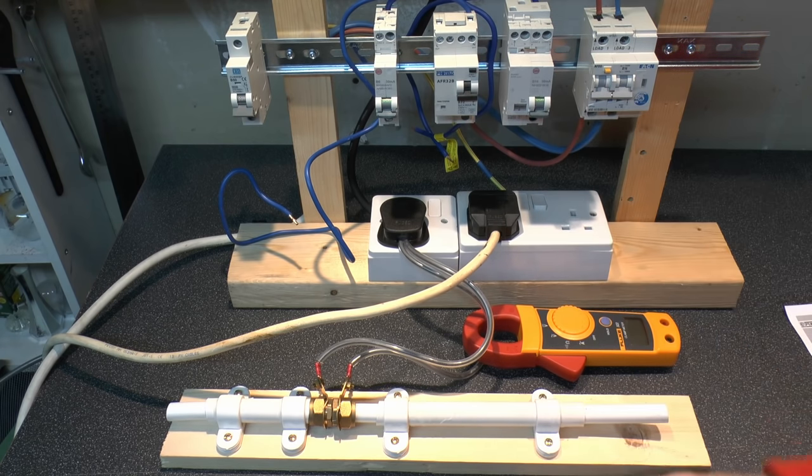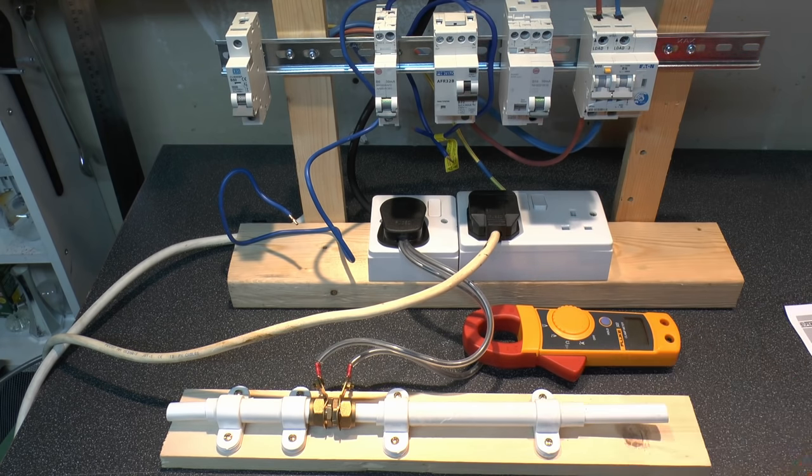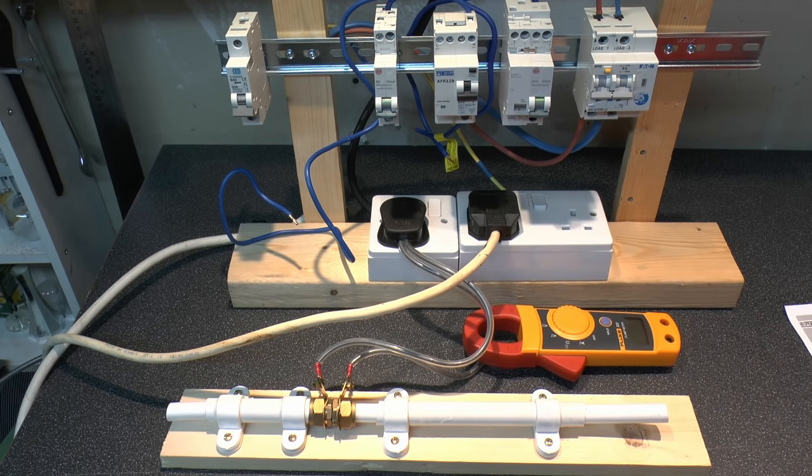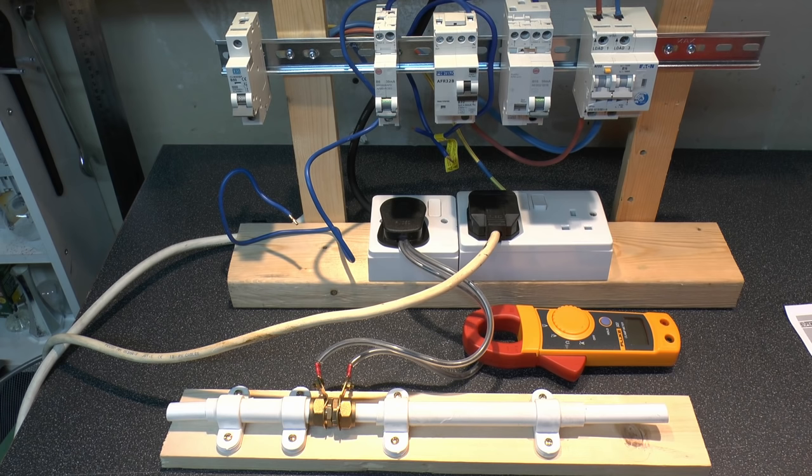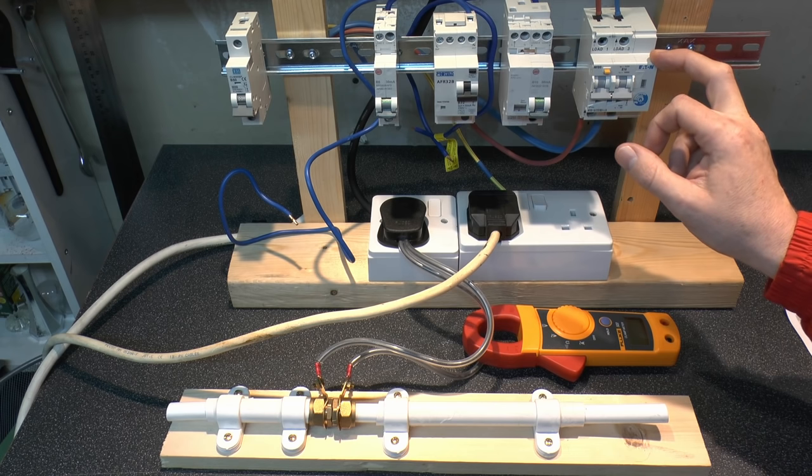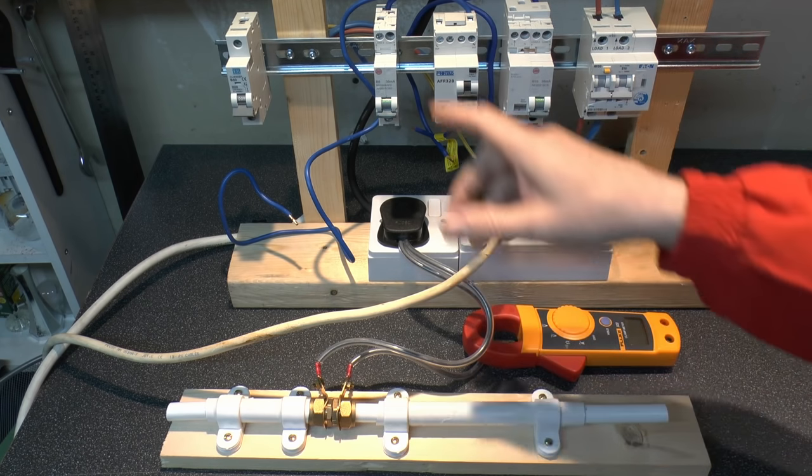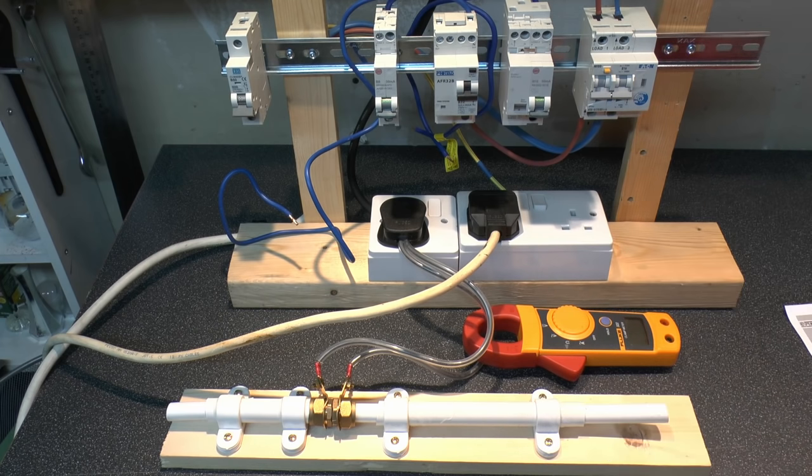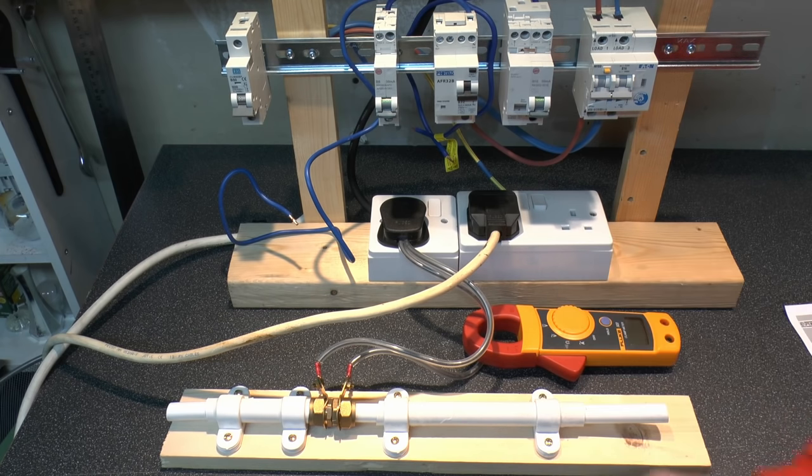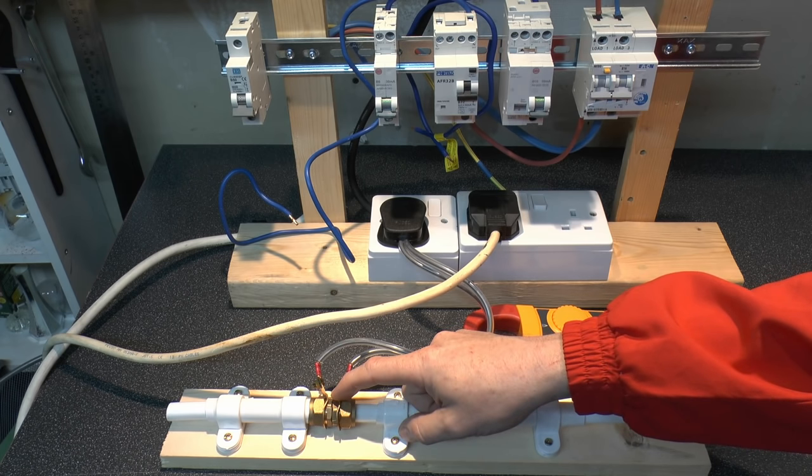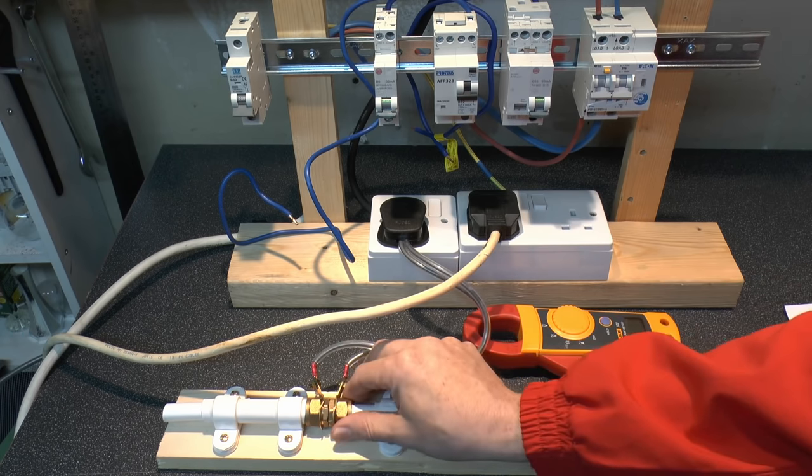Now one important thing about arc fault detection devices, which as we've seen in the other videos they don't work on very low current, so that one we had a lamp there didn't get very far because the current was too low. This one claims to need at least 2.5A to operate, as do the others here. The Wilex one apparently can work down to 1.5A, but certainly need a couple of amps flowing.